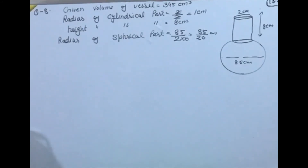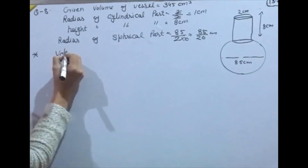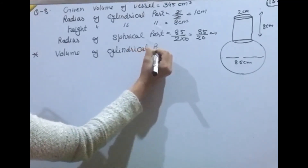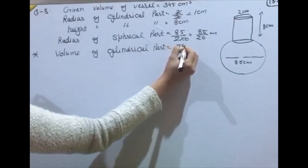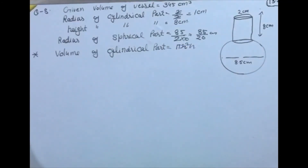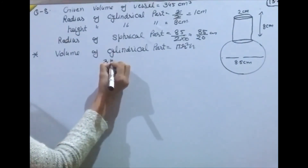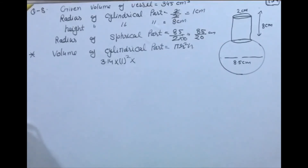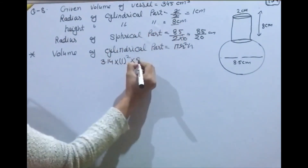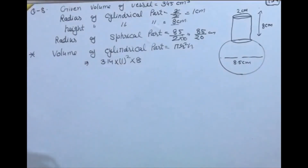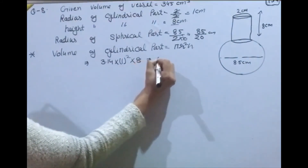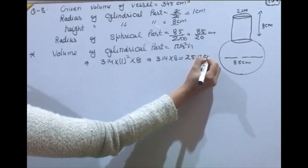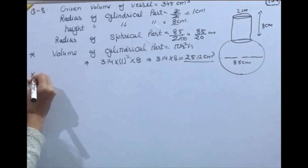Volume of cylindrical part = π r² h = 3.14 × 1² × 8 = 3.14 × 8 = 25.12 cm³.